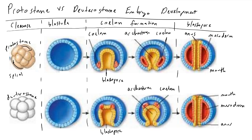Because of that asymmetrical arrangement, the cells are called determinant. So if we were to number these cells, we know that cell one, for instance, would go off and form a digestive tract or something like that.